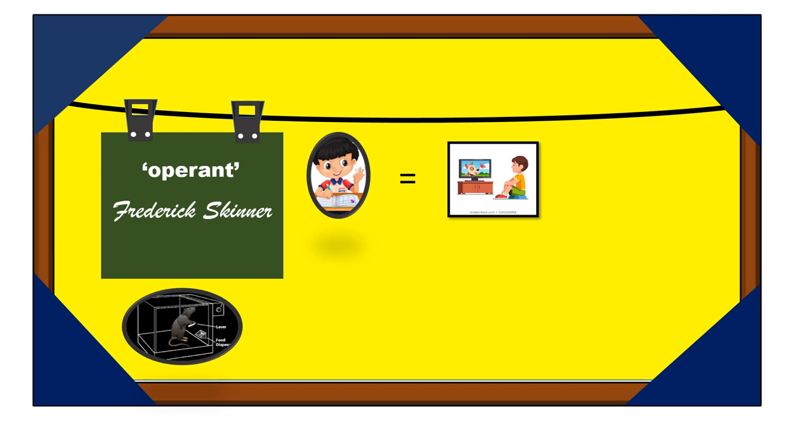Reinforcement is the key element in Skinner's S-R theory. A reinforcer could be anything. It could be a parent saying good work or the child obtaining an A in history which gives the child a feeling of accomplishment and satisfaction. These are examples of positive reinforcement.